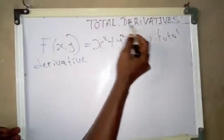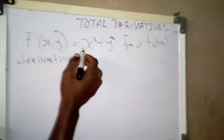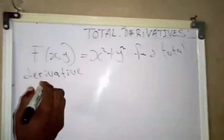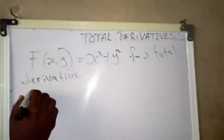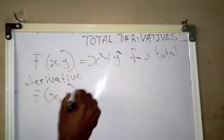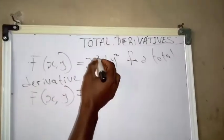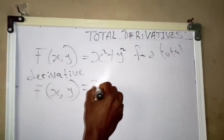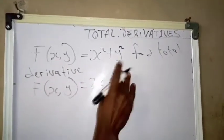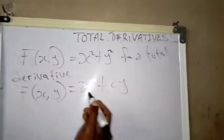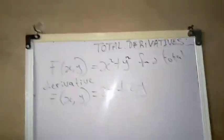Total derivative. To find the total derivative you must differentiate both x and y. Our f(x, y) total derivative equals 2x plus 2 plus 2y. This is our total derivative.